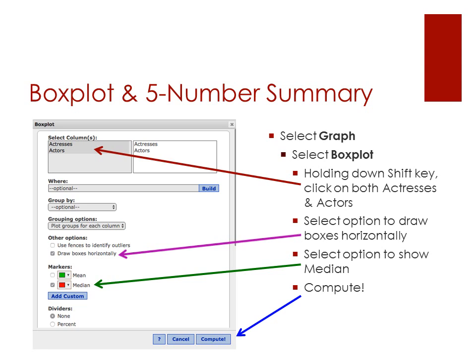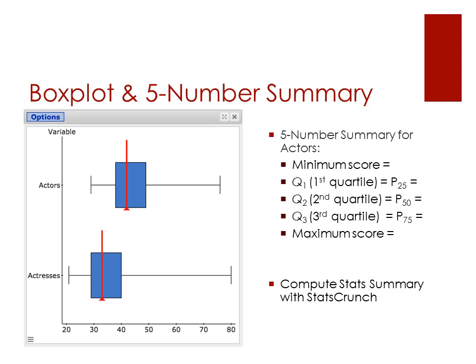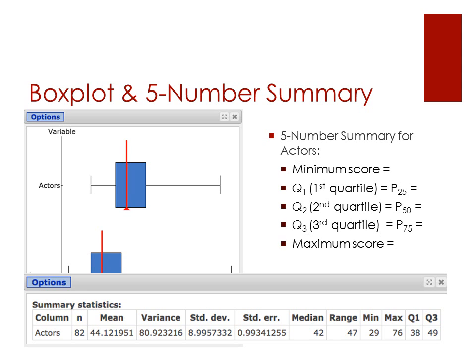When you've done that, you should get something that looks like this — a visual representation comparing the two box plots. In order to get the numbers to map onto these, we're going to use the StatCrunch summary to compute our values.